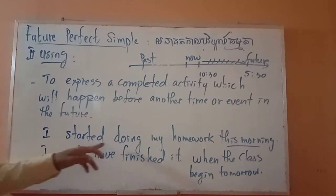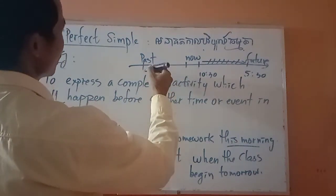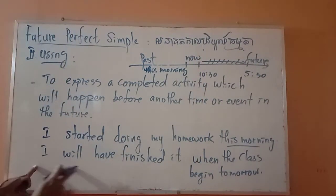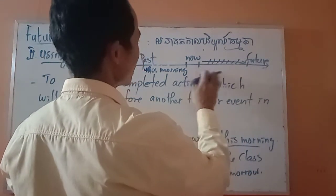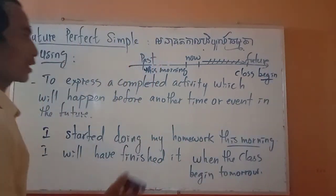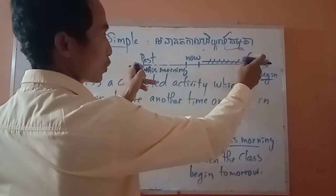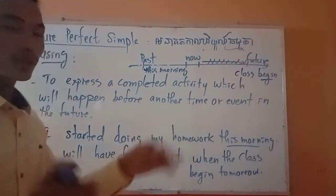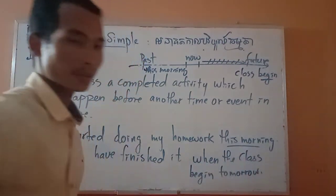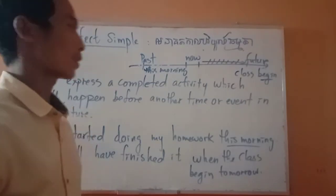I will finish it tomorrow. I started doing my homework this morning, and I can say: by this morning I will have finished it when the class begins tomorrow. The class begins here, so the action starts from here until here. We can say: I will have finished it when the class begins tomorrow — I will complete it all.